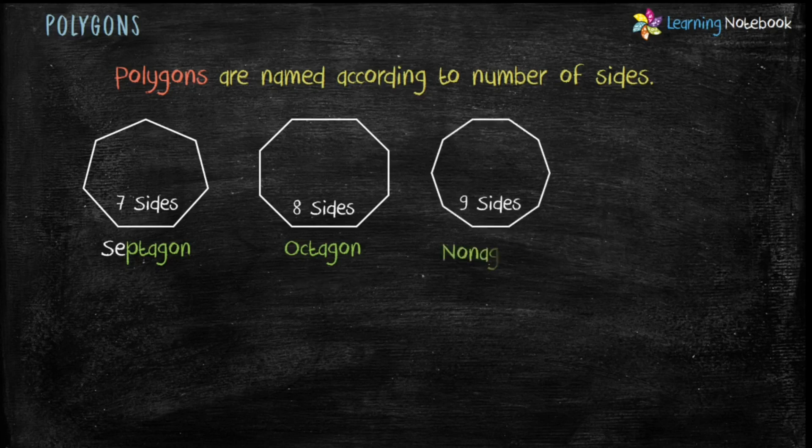Next, a polygon with nine sides is called nonagon. It can easily be remembered from nine. As both words, nonagon and nine start from letter N. And, in the end, a polygon with ten sides is called decagon.